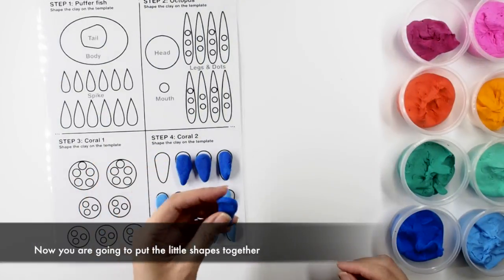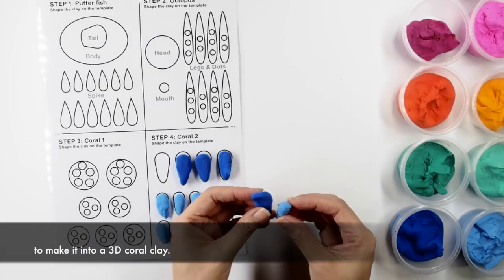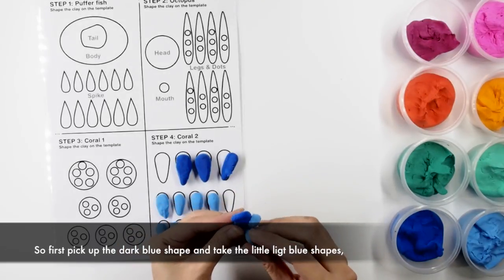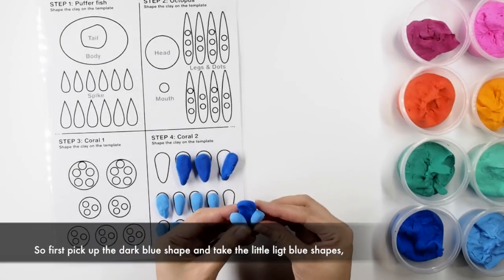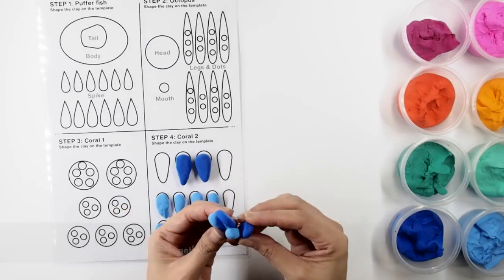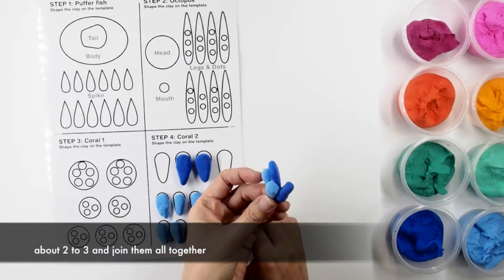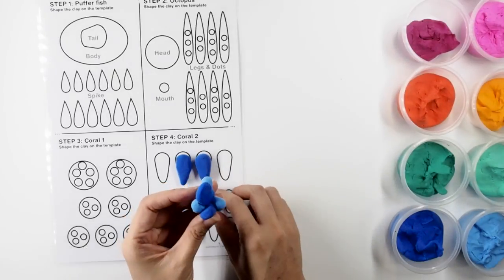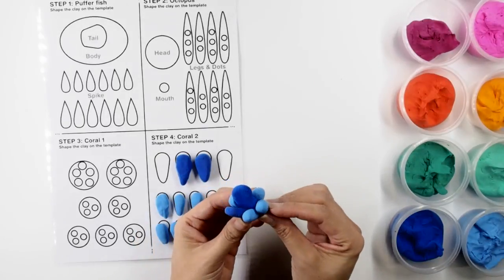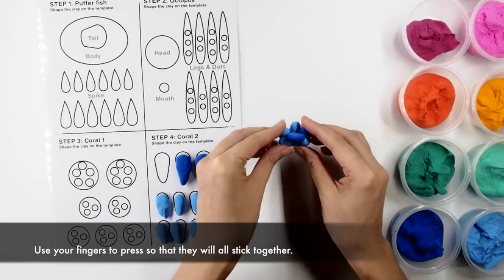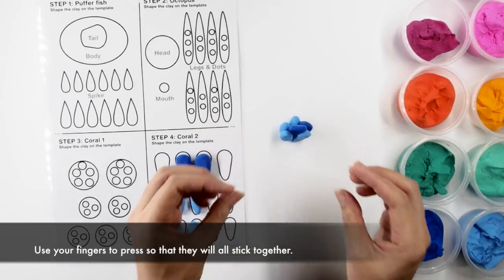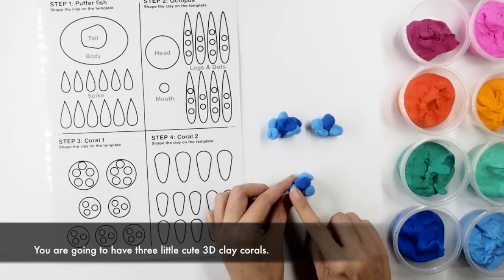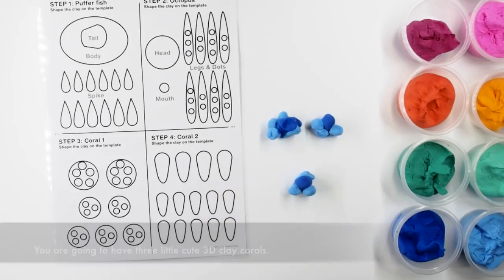Now we're going to put the little shapes together to make it into a 3D coral clay. So first, pick up the dark blue shape and take the little light blue shapes, about 2 to 3 and join it all together. Use your fingers to press so that it all sticks together. You're going to have three little cute 3D corals.